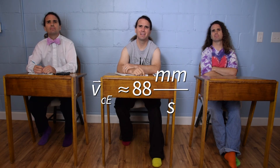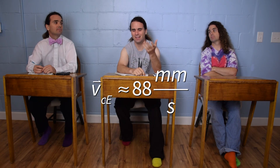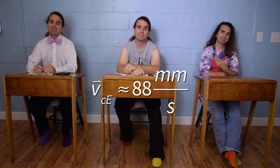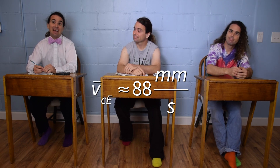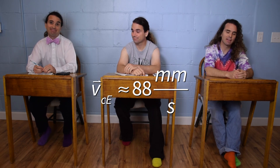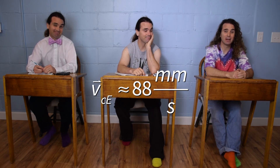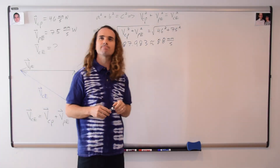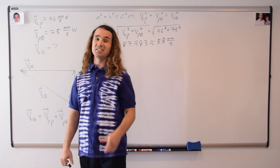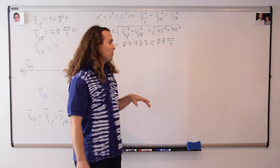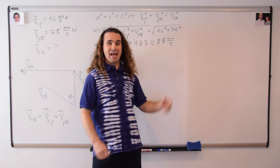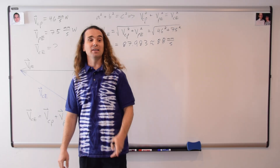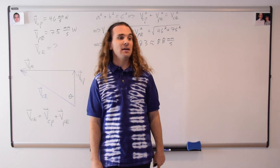Oh man, I forgot direction. That's right — velocity is a vector, and vectors have both magnitude and direction. Velocity is a vector that has both magnitude and direction, so Billy, please figure out theta.